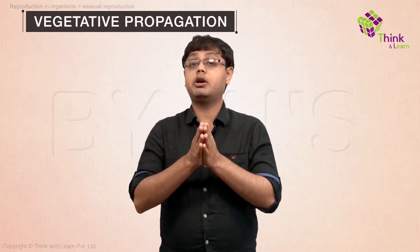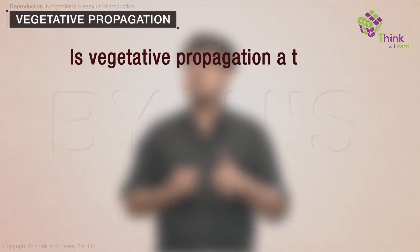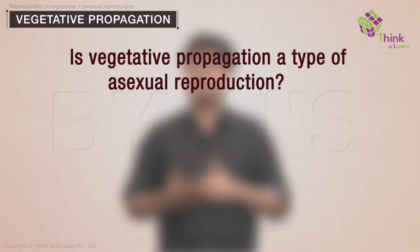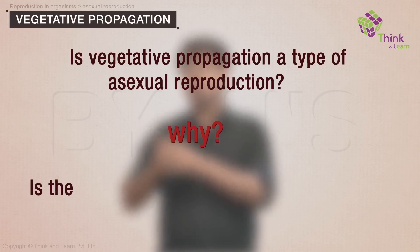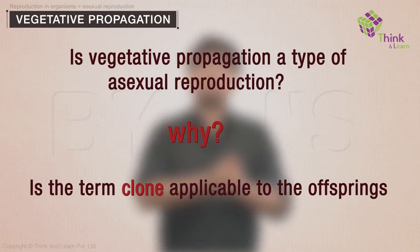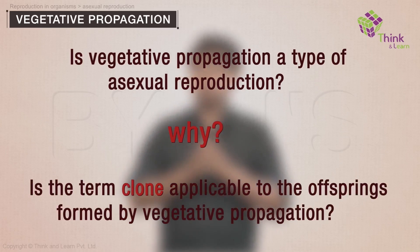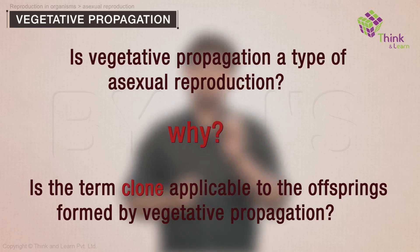You would have learnt about vegetative propagation in your lower grades. What do you think about the following questions? Is vegetative propagation a type of asexual reproduction? If yes, why do you say so? Is the term clone applicable to the offsprings formed by vegetative propagation? If you have not thought about it, think about it for a bit before you proceed.